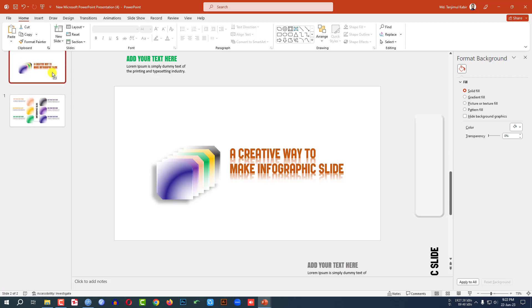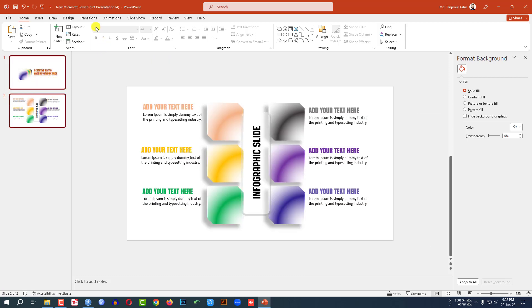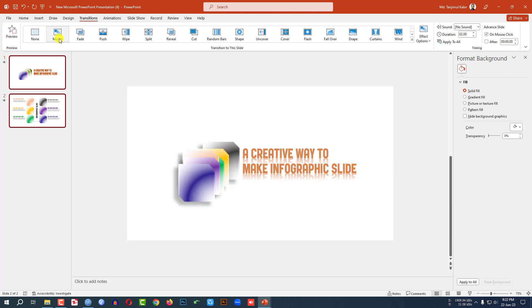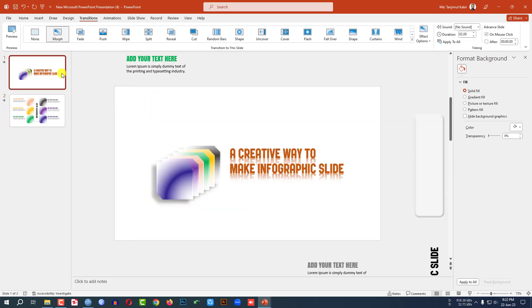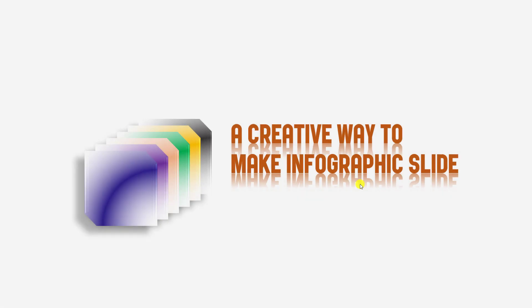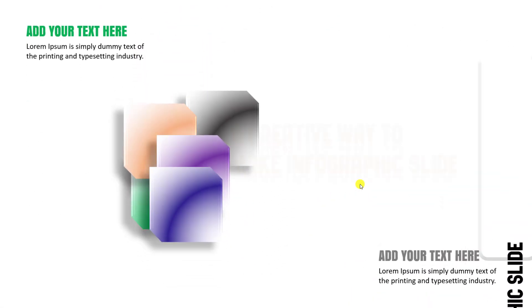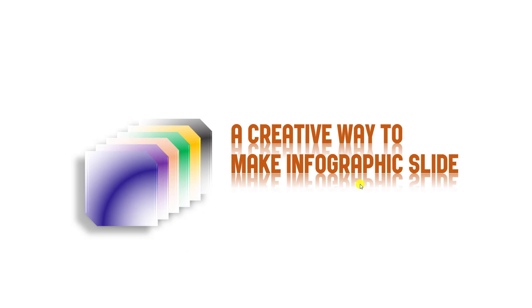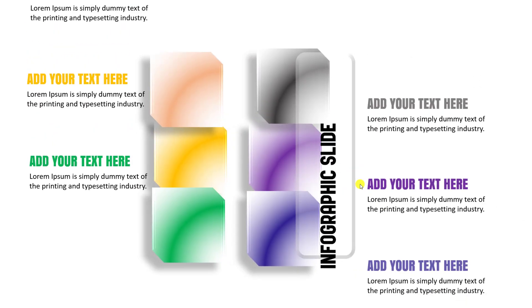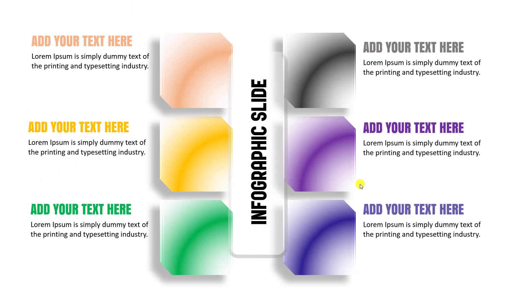Let me place this one as the first slide. Select this one and this one, go to Transition, and click on Morph. Now let me watch the slideshow. This is looking perfect. Hope you found this video helpful. If you like this video, please share it with your friends and family, and don't forget to subscribe. Thank you.